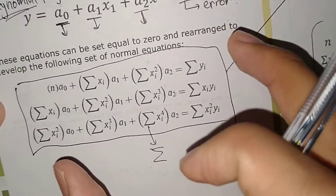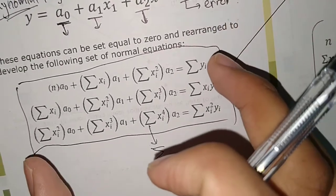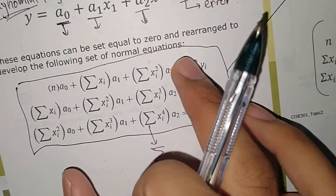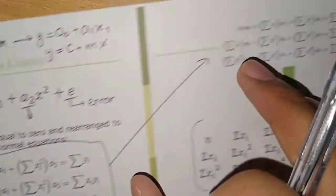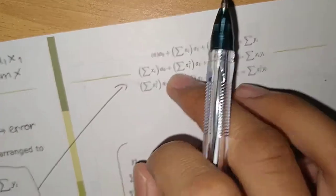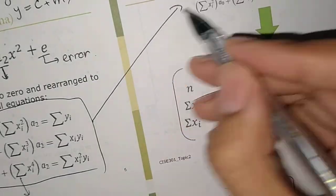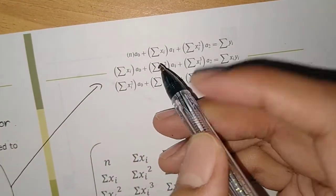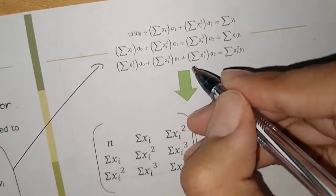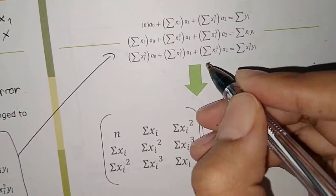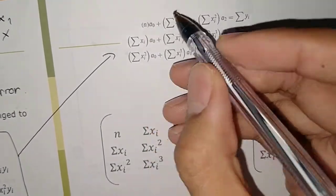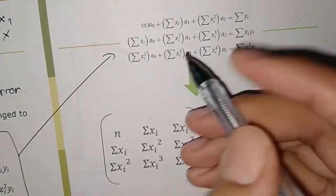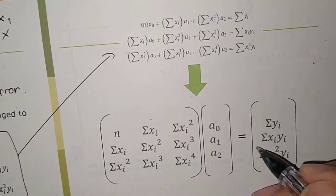Let's move this formula to this equivalent form — it's the same. And then we transform this form into matrix form.